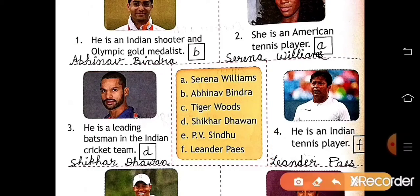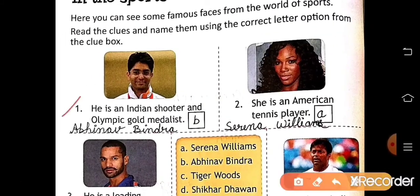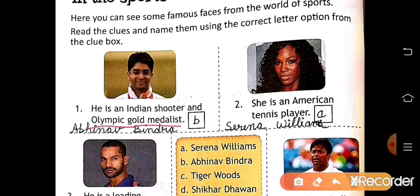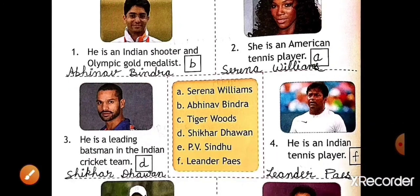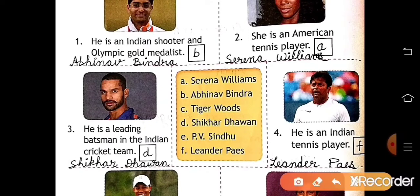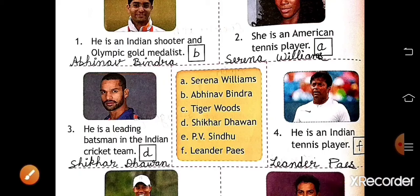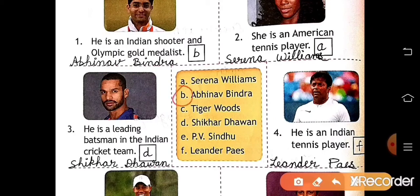First: he is an Indian shooter and Olympic gold medalist. So who is it? Abhinav Bindra. Write the name here. Abhinav Bindra is at B number, so write B here.